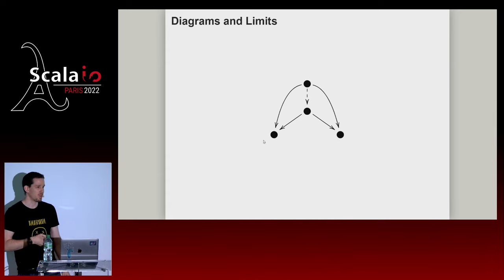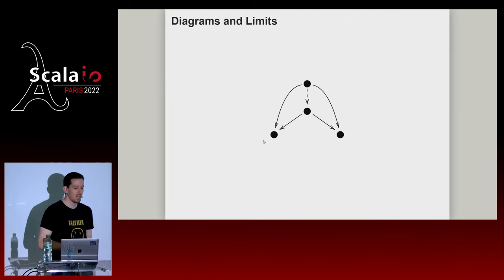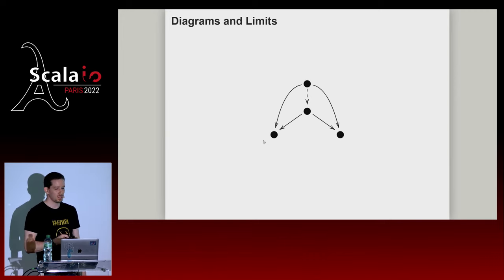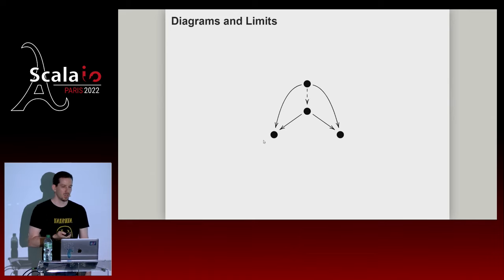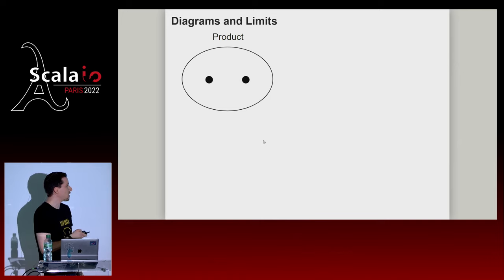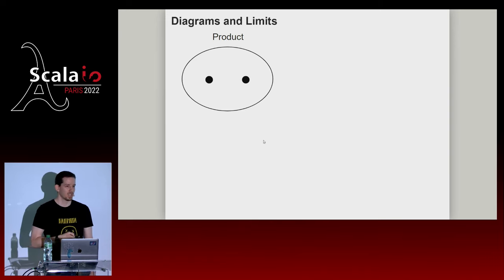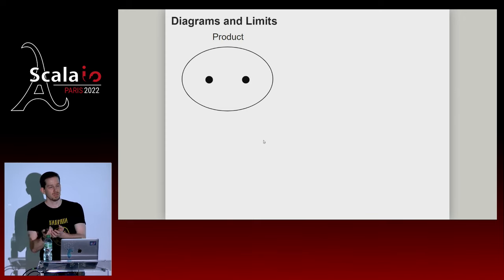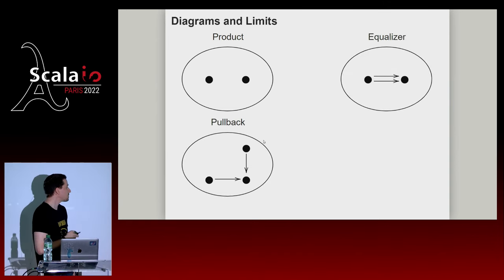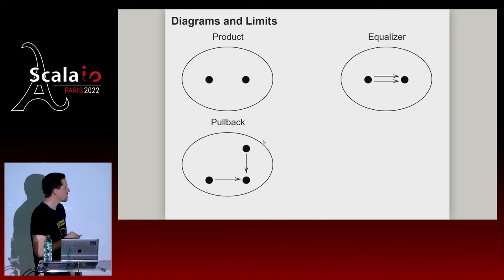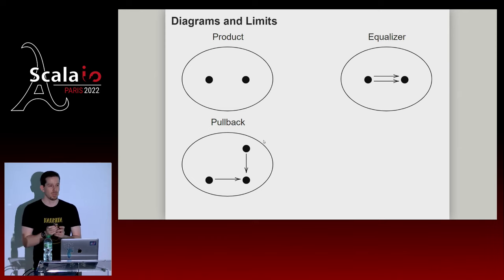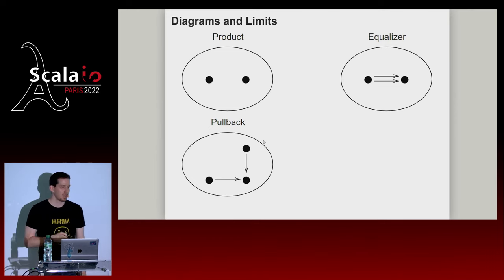What did we accomplish by describing the product in this roundabout way with indexing categories, cones, and limits? We distilled the concept of a tuple into a very, very small thing — the indexing diagram. Once you write this down, it fully describes for a mathematician what a tuple is. Now you have a new algorithm for exploring the idea space: draw a picture, get a concept. Each picture you draw can be converted to this scheme — choose an indexing category, do the universal construction with cones and limits, and you have a concept.